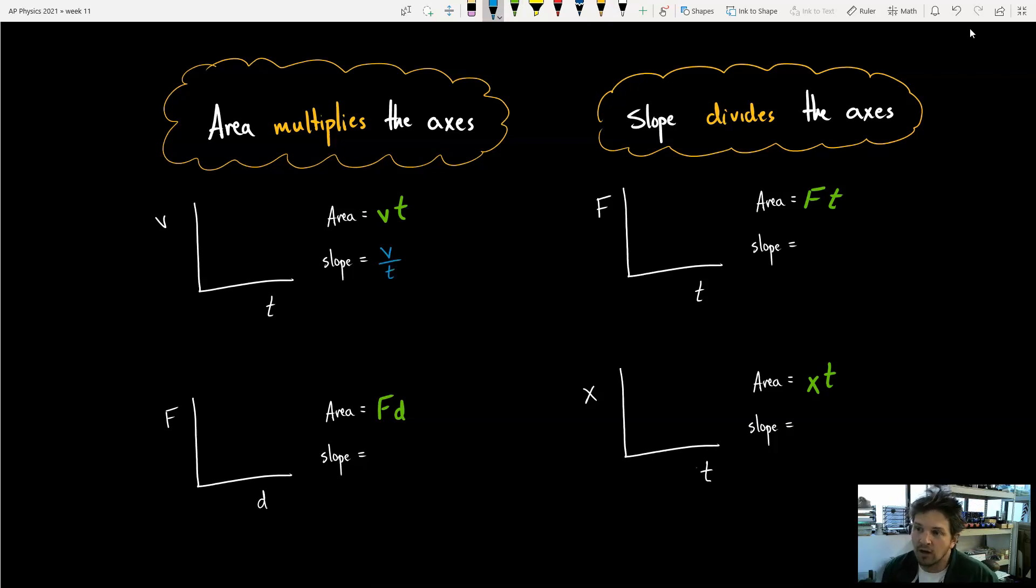The slope for force time graph would be force over time. For a force distance graph, we'd have force over distance. And then same thing for position and time graph, we would have position over time.